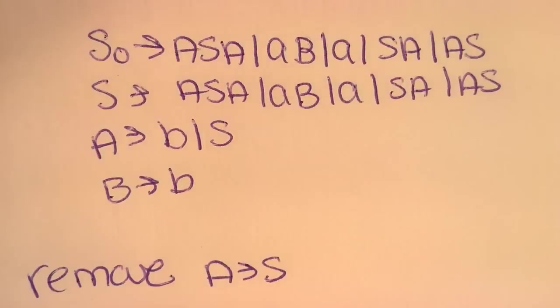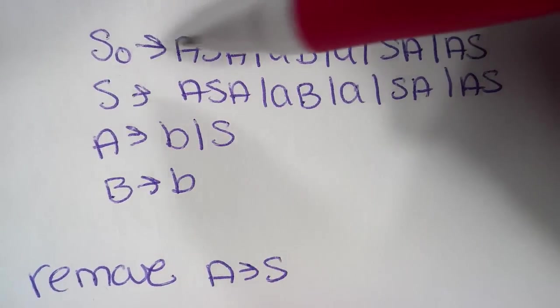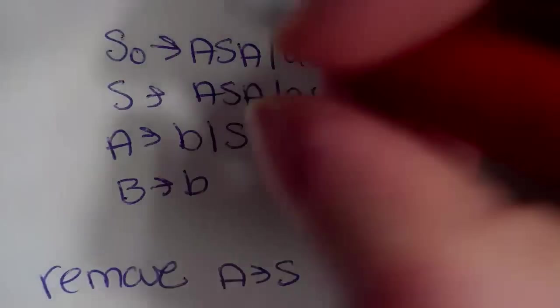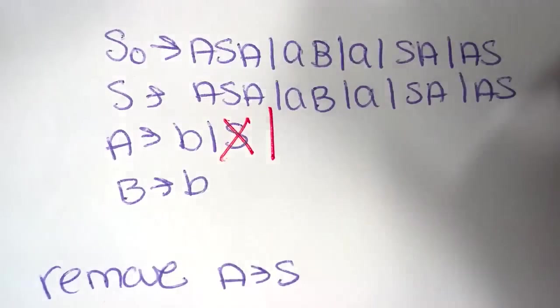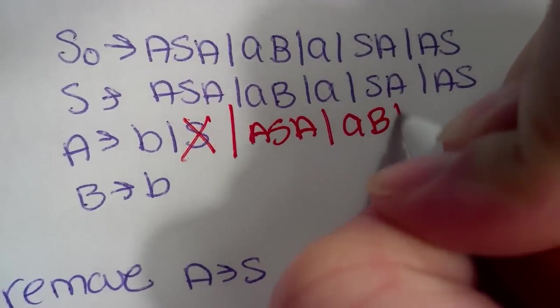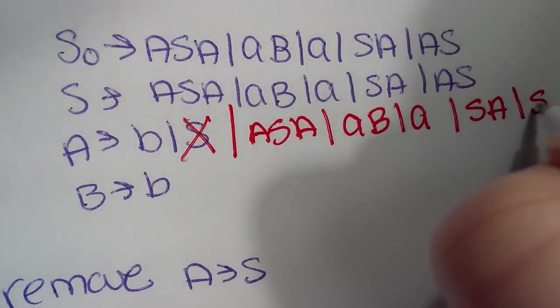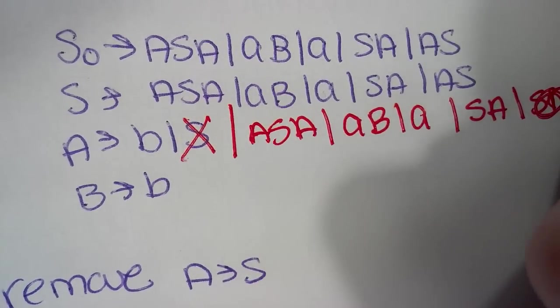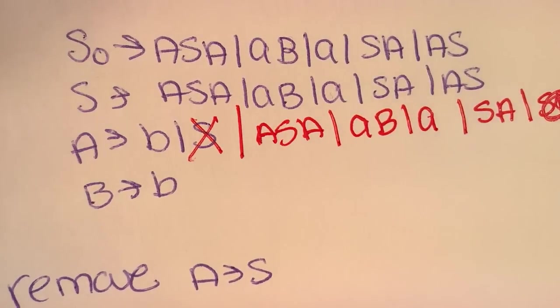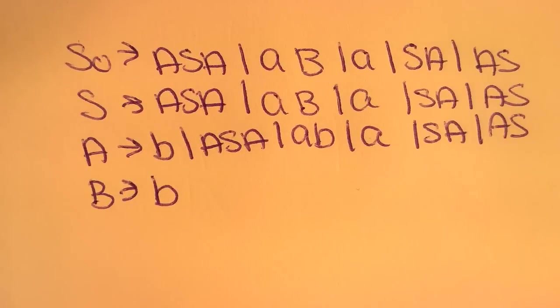Next step is to remove A points to S. And again, just like when we knew what S naught pointing to S meant, all we have to do is cross off the S here and replace it with what's in S. So we split ASA or AB or A or SA or AS. So that is our new equation, which is now simplified down here.